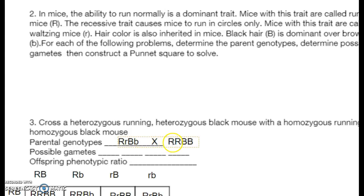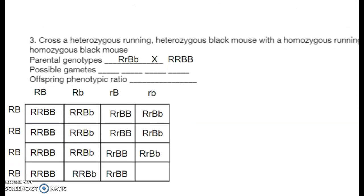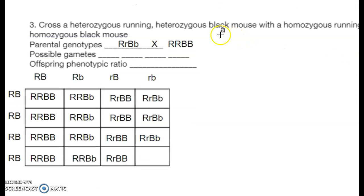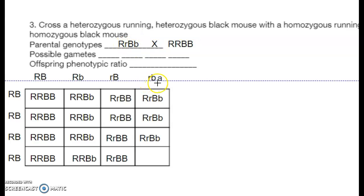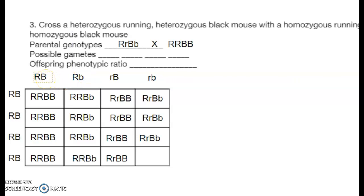Heterozygous running is big R little r; heterozygous black is big B little b. For the homozygous running black parent it's big R big R, big B big B. For the heterozygous parent, big R can go with big B, big R with little b, little R with big B, and little R with little b — four distinctly different gametes possible.